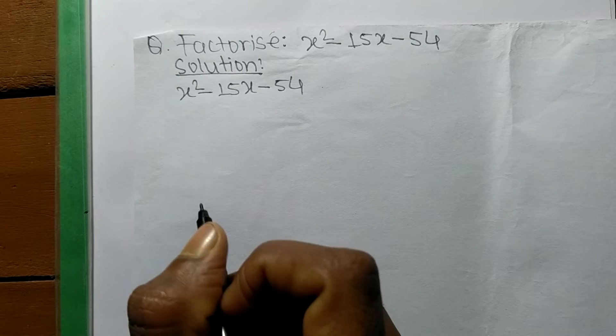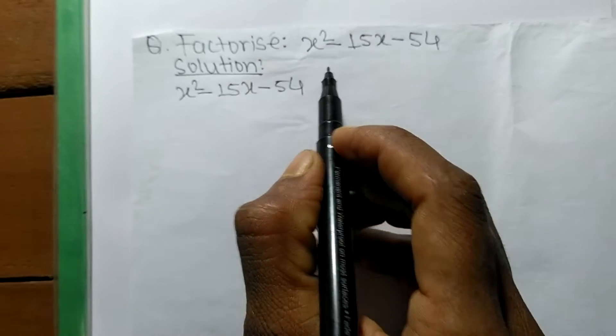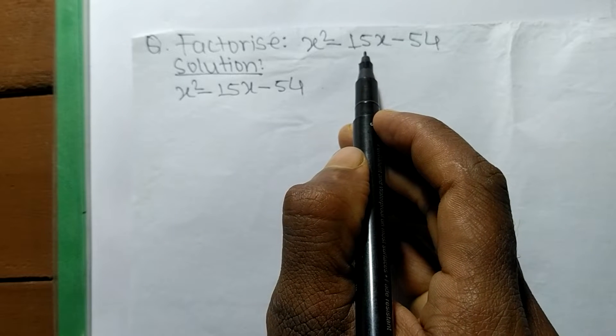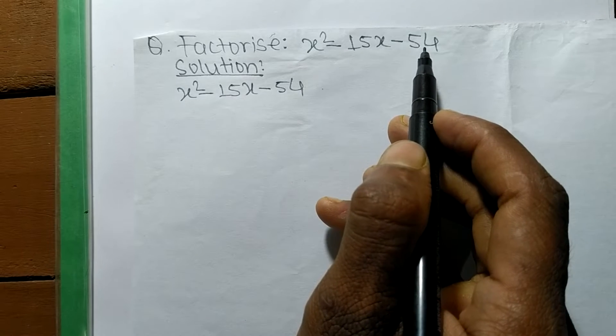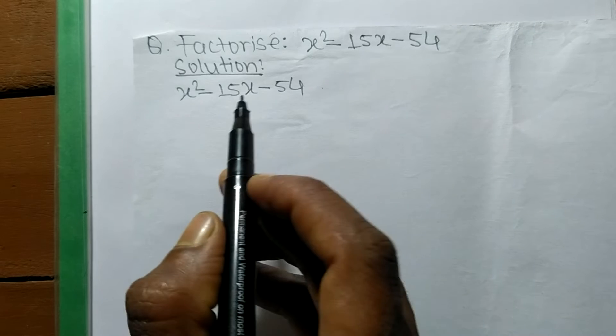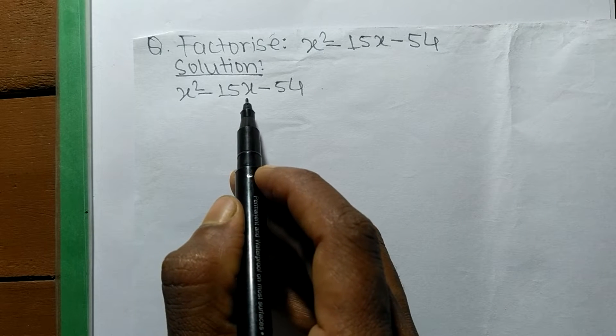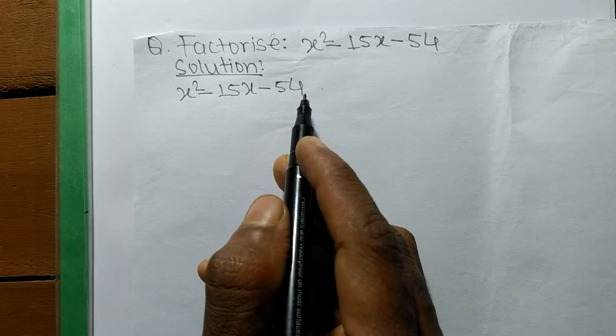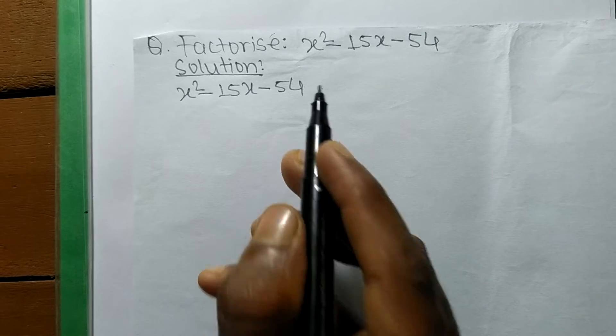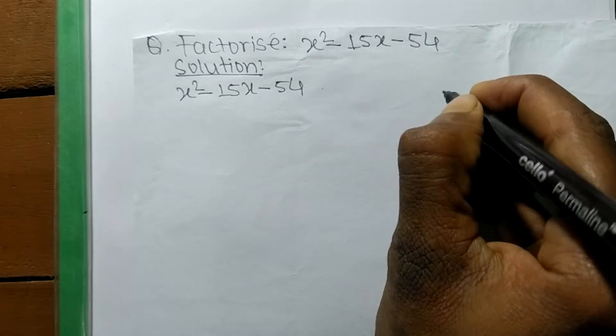Today in this video, we are going to factorize x² - 15x - 54. For the solution, first we need to find the prime factors of 54.